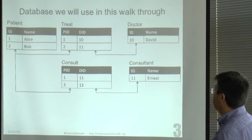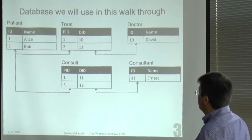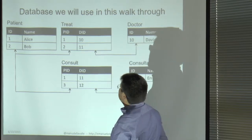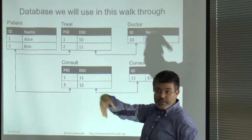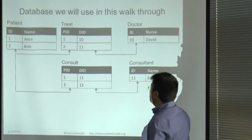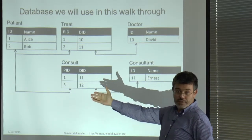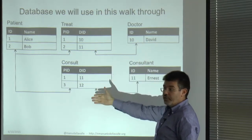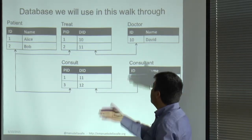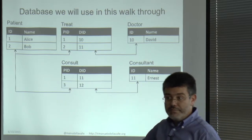The database is a classical healthcare database. You have patients, doctors, and a table in the middle capturing the relationship — patients are treated by a doctor, and a doctor treats patients, depending on which way you read it. There is also a second table capturing a different way to go to the doctor: asking for a second consultation. The patients are Alice and Bob, the doctor is David, the consultant is Ernest, and the various IDs do the mappings.